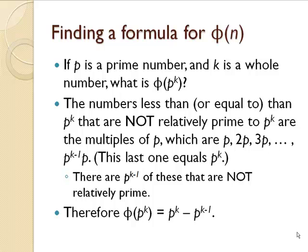The numbers less than or equal to p to the k that are not relatively prime to p to the k are the multiples of p. They are p, 2p, 3p, 4p, all the way up to p to the k minus 1 times p, which is actually p to the k. Those are the numbers that are not relatively prime to p to the k. There are p to the k minus 1 of these. Therefore, phi of p to the k is p to the k — all the numbers — minus p to the k minus 1, the ones that are not relatively prime to p to the k.